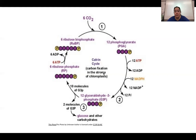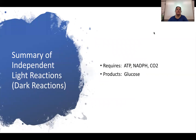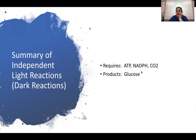Summary of the Calvin cycle: reactants required are ATP, NADPH, and CO2. The main product is glucose. Additional products include ADP and NADP+, since ATP is broken down and NADPH is converted back to NADP+.